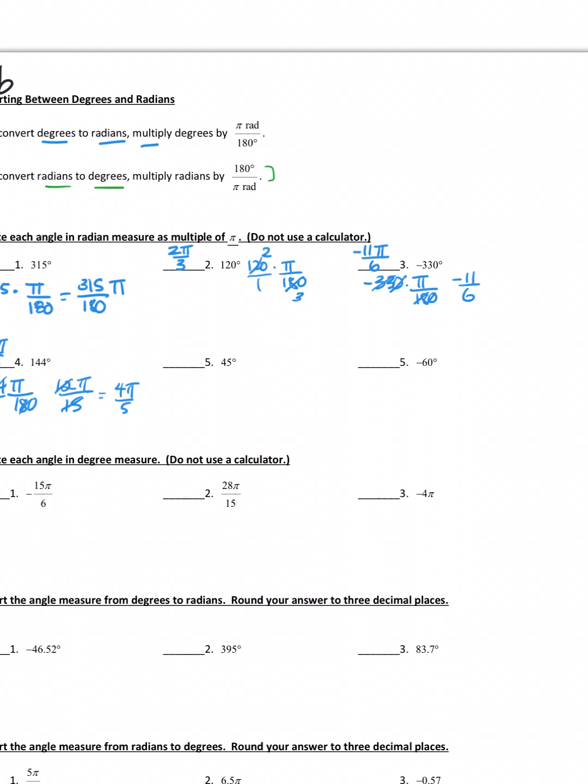I'd encourage you to try the next two on your own. Pause the video, try them on your own, and then come back and check your answers. So on number 5, I got π over 4, and on number 6, you should get negative π over 3. I encourage you to do these on your own, and we'll revisit those in class if we need to.